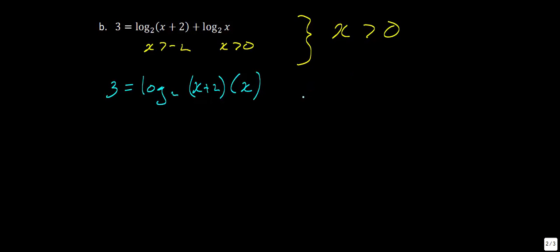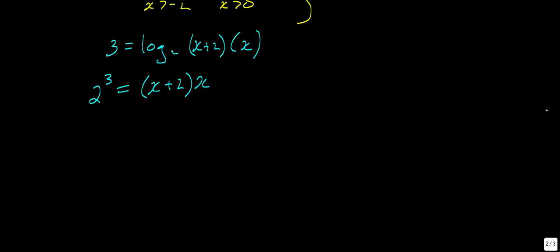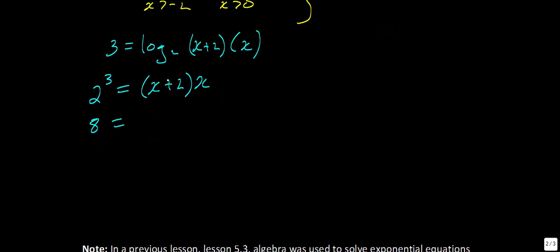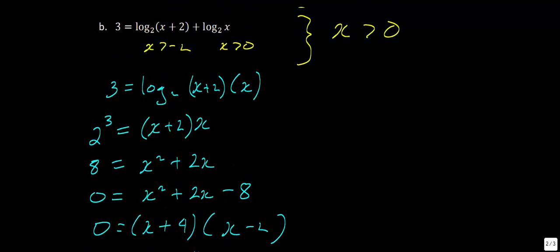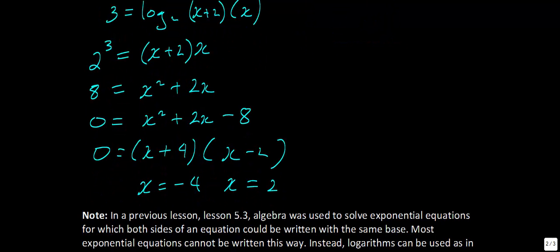Rewriting in exponential form: 2 raised to the power of 3 equals (x + 2) times x. So 2³ equals 8. Using the distributive property, 8 equals x² + 2x. Moving everything to one side: x² + 2x − 8 equals 0. Numbers that multiply to −8 with a sum of 2 are positive 4 and negative 2. So x equals −4 or x equals 2. Since x must be greater than 0, we reject x equals −4. Our answer is x equals 2.